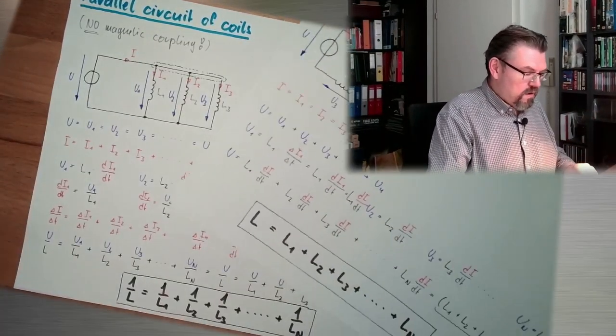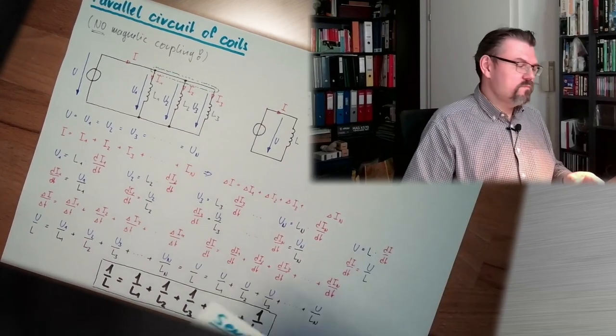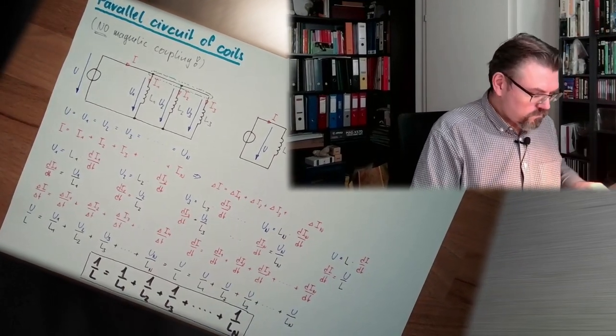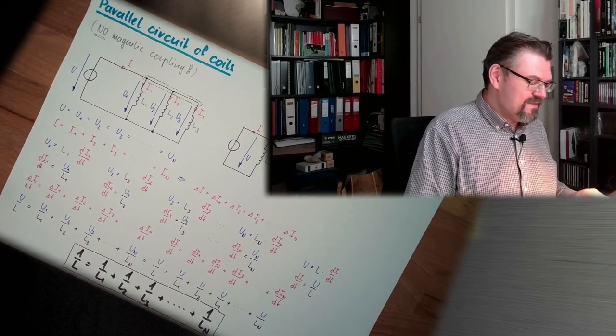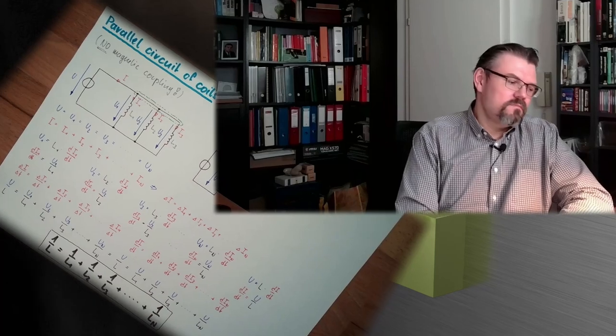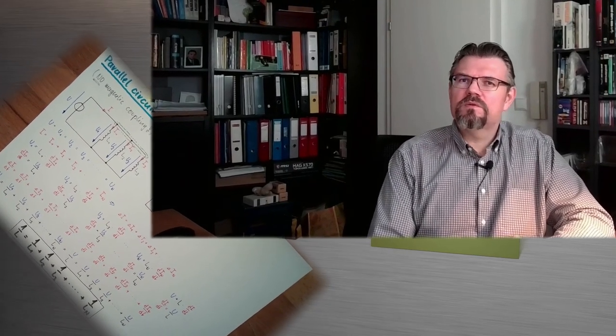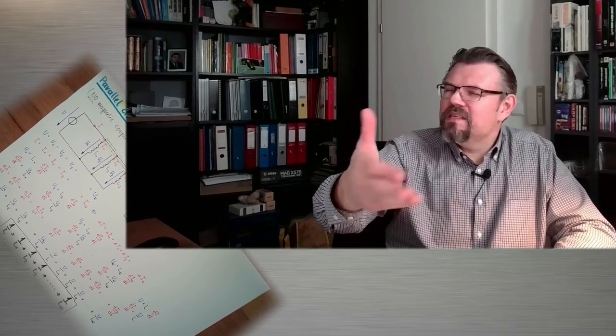So, here we had our series circuit, and this is our parallel circuit. Parallel circuit of coils. Now, we know how to deal with coils, how to find a replacement, not get rid, find a replacement coil which we'll substitute.